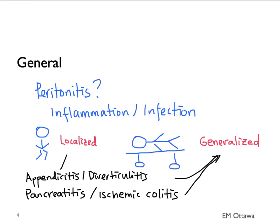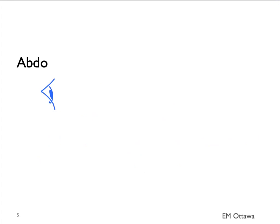Other conditions that can give generalized peritonitis include GI perforation, either from an ulcer or bowel obstruction. Patients with generalized peritonitis are very sick. After looking at the patient's vital signs and general appearance, we want to do a focused abdominal exam that includes observation, auscultation, and palpation.